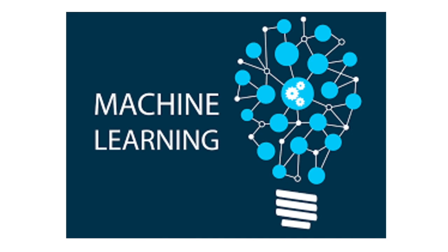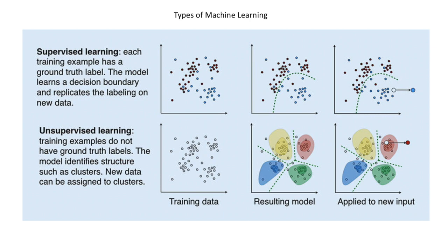Therefore, they utilize a branch of artificial intelligence called machine learning. Machine learning involves the use of specialized algorithms to classify data using a variety of different approaches. There are really two main classes of machine learning algorithms: supervised learning and unsupervised learning.